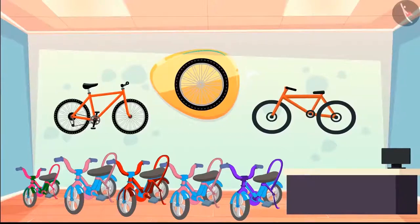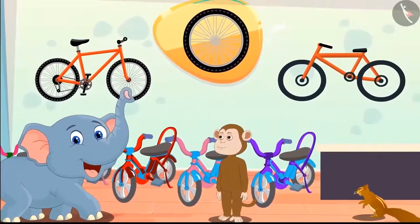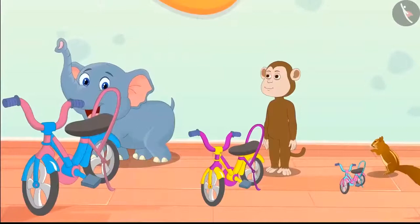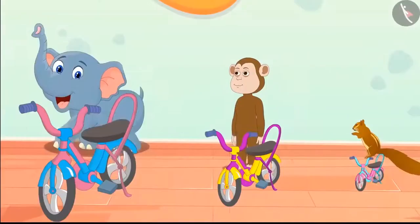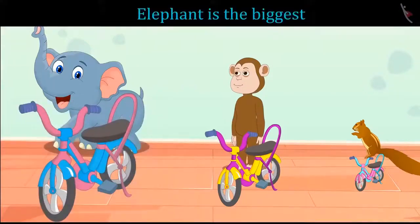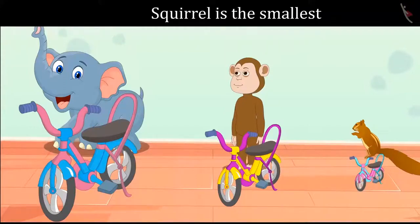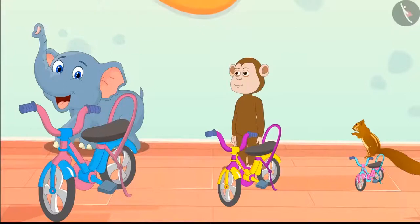A new bicycle shop is open in the forest and all animals are very excited. Elephant, monkey, and squirrel all three reach to buy bicycles from the shop. This is the biggest bicycle — it is for the elephant because it is the largest among those three animals. Can you tell which is the squirrel's bicycle? The squirrel is the tiniest among those three animals and his bicycle is also the smallest.